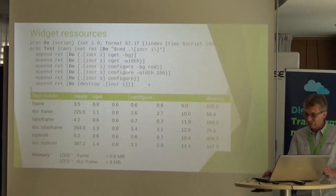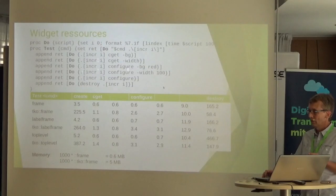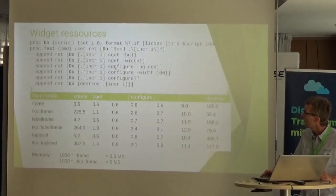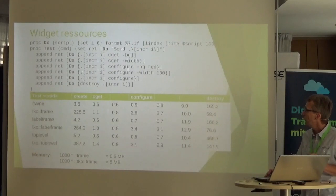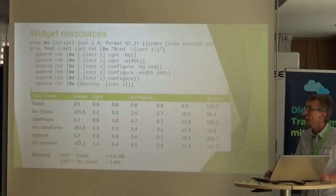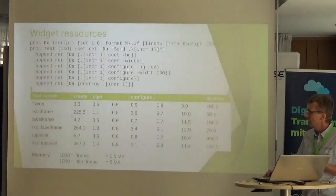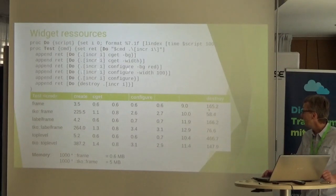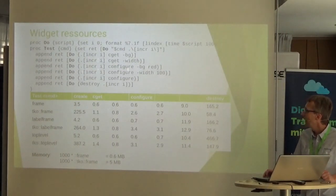Some tests were done to measure resource usage. For CGET and configure methods, performance is in the same range as normal widgets. Widget creation takes somewhat more time — a little more than expected. Unexpectedly, widget destruction is faster than with normal TK widgets. Memory consumption for 1,000 widgets shows some additional memory is needed.